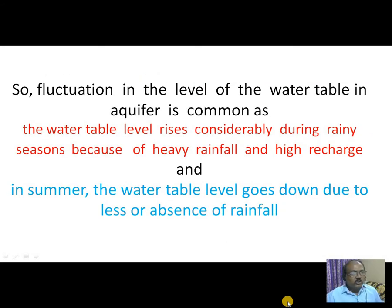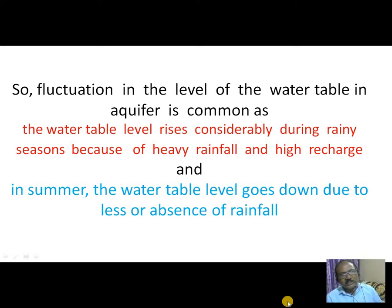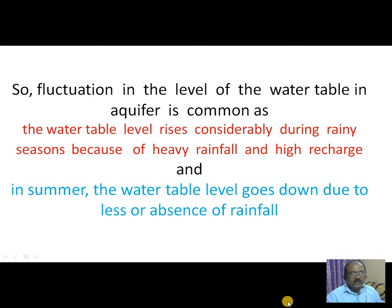Fluctuation in the level of the water table in aquifers is common. Water table level rises considerably during rainy seasons due to heavy rainfall and high recharge, and in summer the water table level goes down due to less rainfall or absence of rainfall.